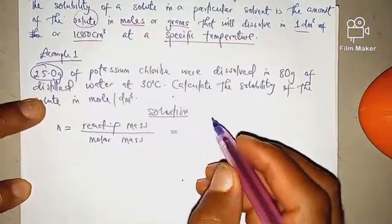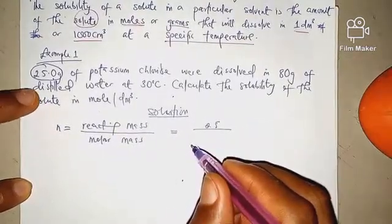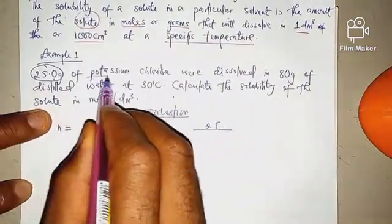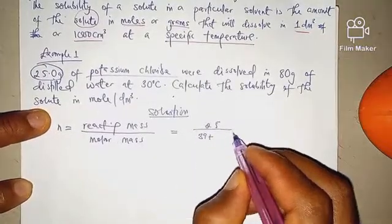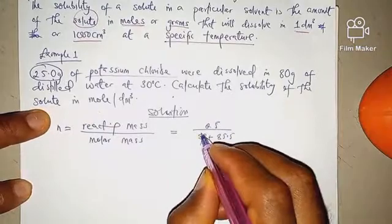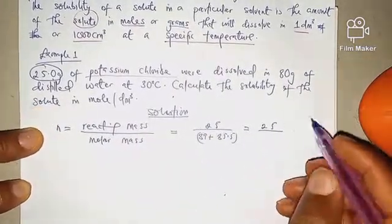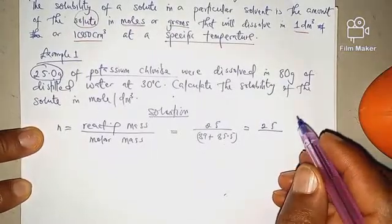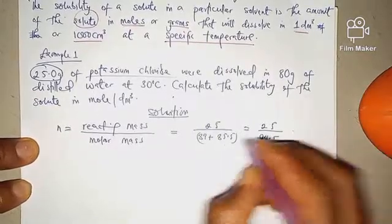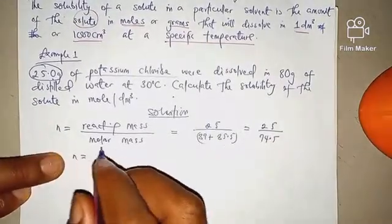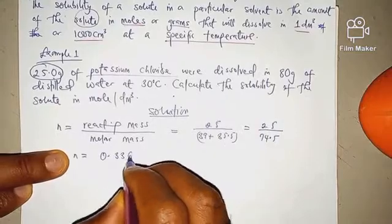Our reactive mass here is 25, and our molar mass — the molar mass of potassium chloride — potassium is 39 plus chlorine is 35.5, so we add them together: 39 + 35.5 = 74.5. When we divide, our number of moles equals 0.336 moles.